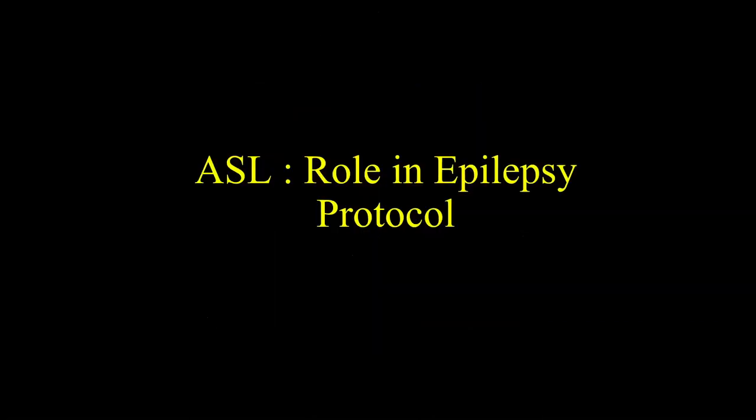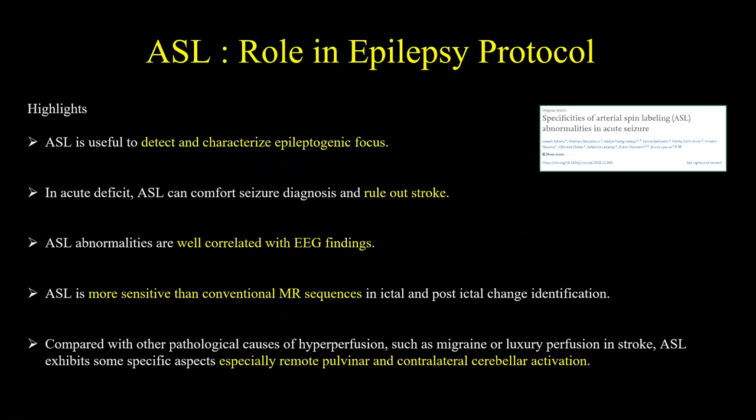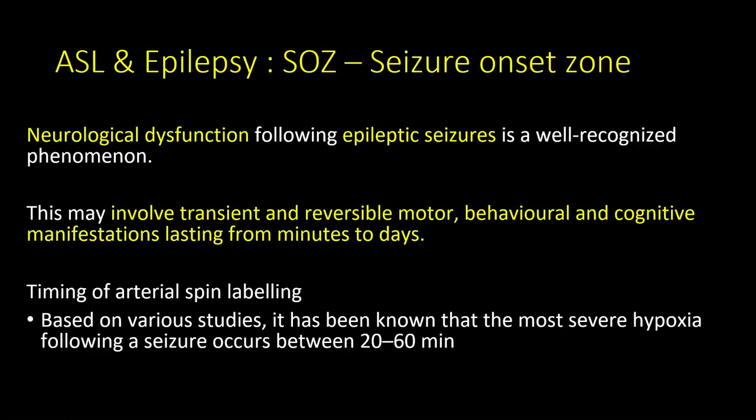Starting with the role of ASL in epilepsy: as per studies, literature review, and our practical experience, ASL is useful to detect and characterize the epileptogenic focus — in other words, the seizure onset zone (SOZ). In acute deficit, ASL can confirm seizure diagnosis and help rule out other mimics. ASL abnormalities are well correlated with EEG findings, and ASL is more sensitive than conventional MRI sequences in identifying ictal and post-ictal changes.